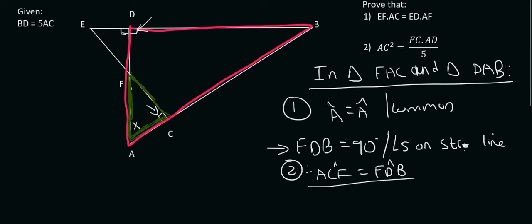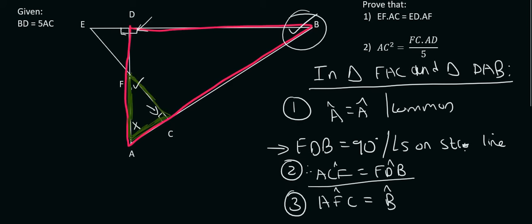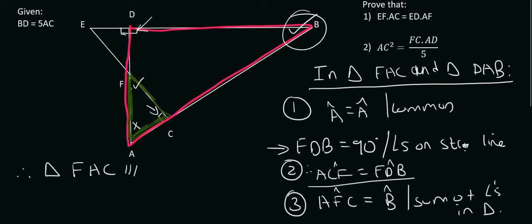The third one is the easiest — the sum of angles in a triangle must add up to 180, so you look for the angles that haven't been used. In the green one we haven't used F, so I'll call that AFC. That should equal the unused one in the pink triangle, which is B. So angle AFC equals angle B — sum of angles in a triangle. Therefore these two triangles are similar: triangle FAC is similar to triangle BAD, reason being angle, angle, angle.